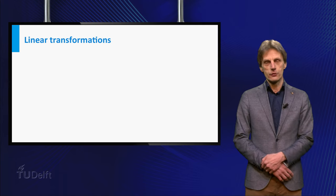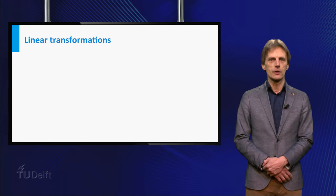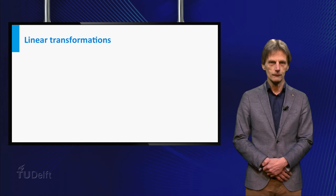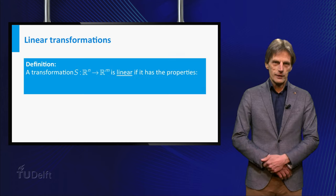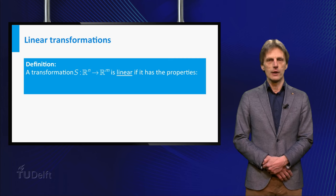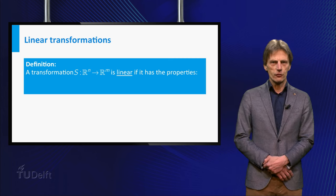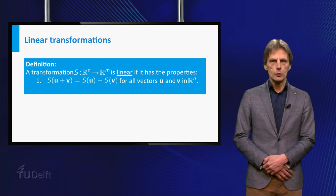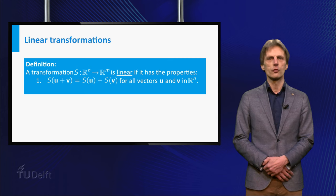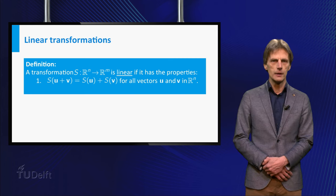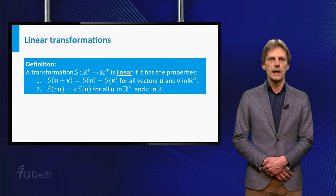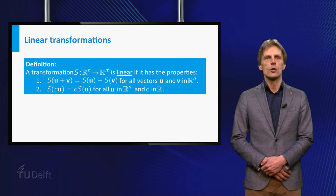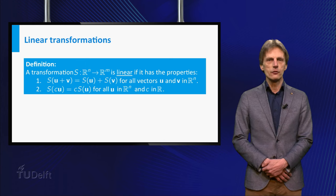The key to understanding the true nature of matrix multiplication is given by the connection between matrices and linear transformations. Recall that the transformation S from Rn to Rm is called linear if it has the following two properties: S of u plus v is equal to S of u plus S of v for all vectors u and v in Rn, and secondly, S of c times u is equal to c times S of u for all u in Rn and c in R.